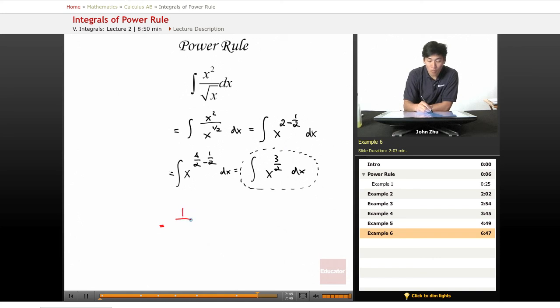So 1 over 3 over 2 plus 2 over 2 times x to the 3 over 2 plus 2 over 2, which equals 1 over 5 over 2 times x to the 5 over 2 plus c. And that reduces down to 2 over 5 x to the 5 over 2 plus c.